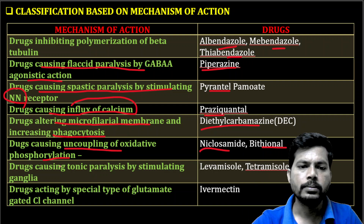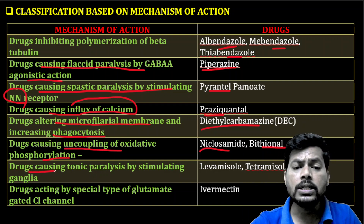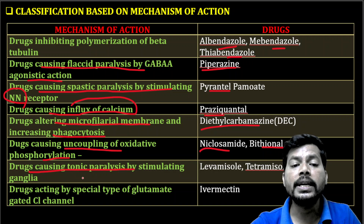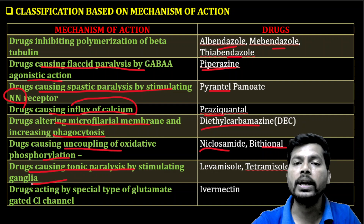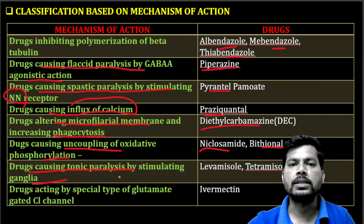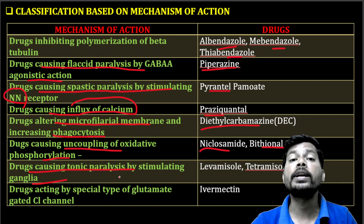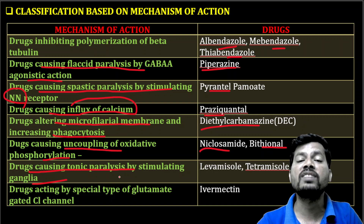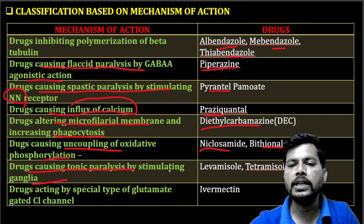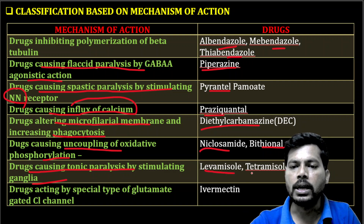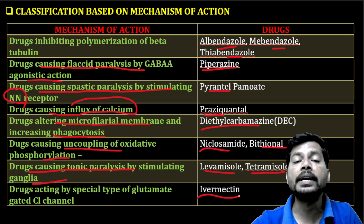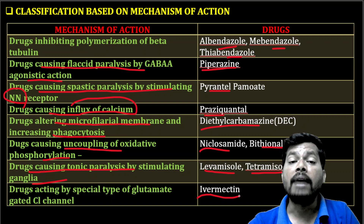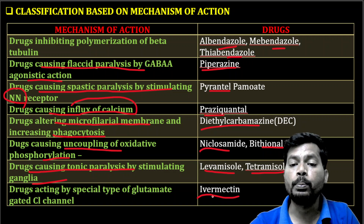Next are drugs causing tonic paralysis by stimulating the nicotinic ganglia. Tonic paralysis means decreasing the muscle tone — the force of muscle contraction — in the worm. Drugs like levamisole and tetramisole fall under this category of anti-helminthics.